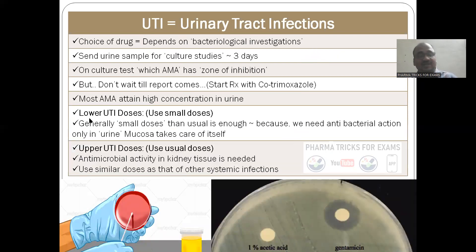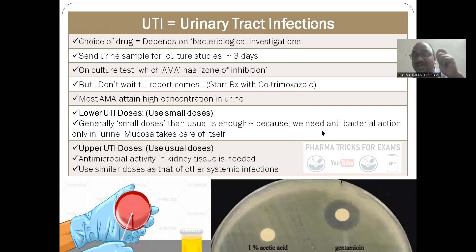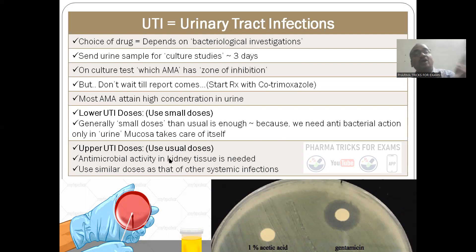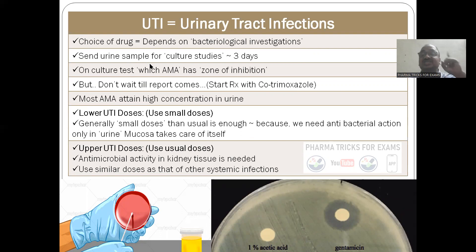For lower UTI, small doses are usually enough because we need antibacterial action only in the urine, and almost all the drugs are excreted into the urine — so only small quantities are sufficient. Whereas for upper UTI — kidney infection — you have to treat it as an infection of the whole body, so usual common doses must be given. Choice of drug depends upon bacterial investigation.